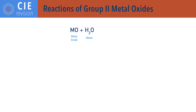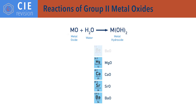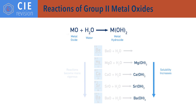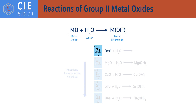Group 2 metal oxides react with water to form metal hydroxides and an alkaline solution, with a general reaction: MO + H₂O → M(OH)₂. The reactions get more vigorous going down the group, and as the solubility of the metal hydroxides increases down the group, the solutions become more alkaline as more hydroxide OH⁻ ions are present in solution. Beryllium oxide (BeO) doesn't react with water.